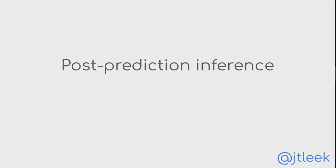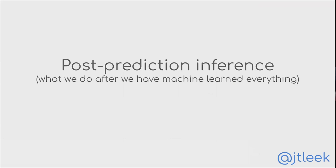I'm going to be talking about post-prediction inference. You can follow me on Twitter at JTLeak. The subtitle is: what do we do after we have machine learned everything? There's a lot of excitement around machine learning and prediction, and our group is really excited about machine learning. We realized we were using these machine learning predictions in a variety of different downstream models after we had made those predictions, so we started to think about what that meant and how to handle it.